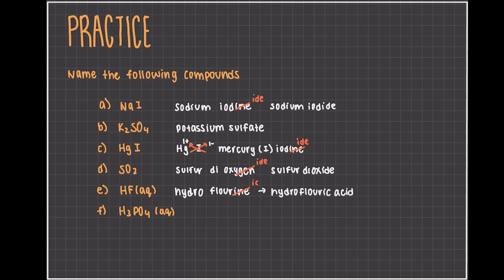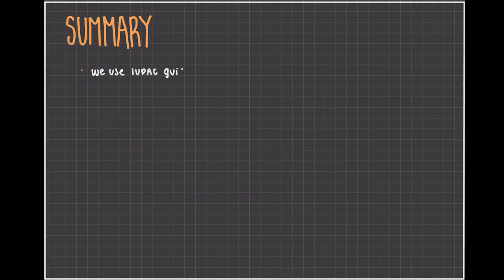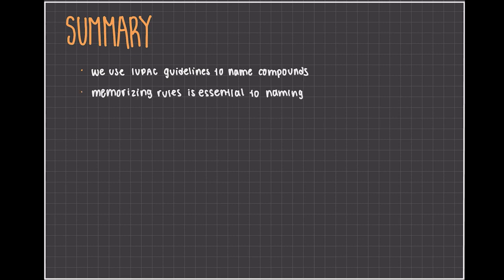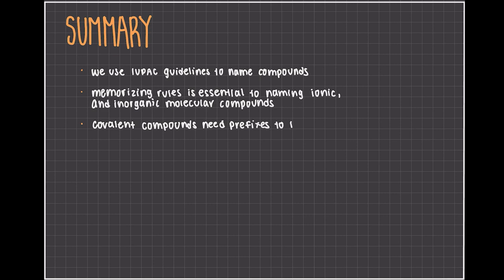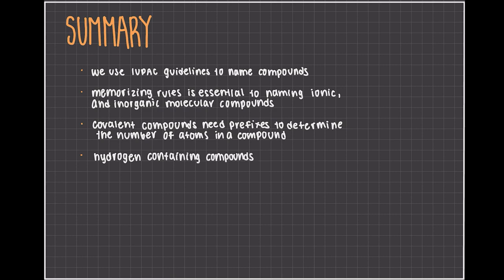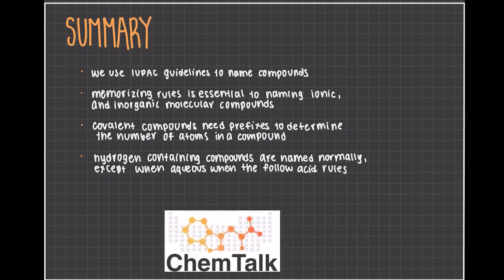For H3PO4, it's aqueous, so we also know it's going to be an acid. So, we start with the anion, which is phosphate. 'Ate' will become 'ic', so then we're left with phosphoric acid. Now, let's summarize what we've learned today. We use IUPAC guidelines to name compounds. Memorizing rules is essential to naming ionic and inorganic molecular compounds, like we learned today. Covalent compounds need prefixes to determine the number of atoms in a compound. Hydrogen-containing compounds are named normally, except when aqueous, when they will follow acid rules.